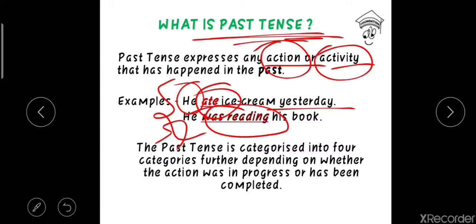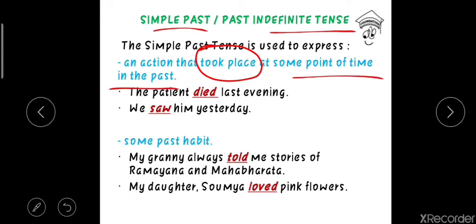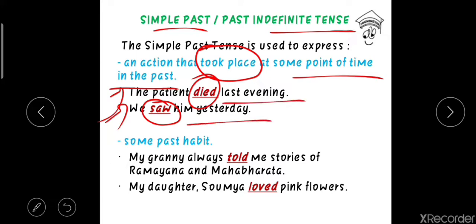The past tense is categorized into four categories depending on whether the action was in progress or has been completed. The first category is simple past or past indefinite tense. It is used to express an action that took place — that is, happened — at some point in the past, generally finished before the time of speaking. For example: 'The patient died last evening' and 'We saw him yesterday.' Both actions were completed at a specific point in the past.